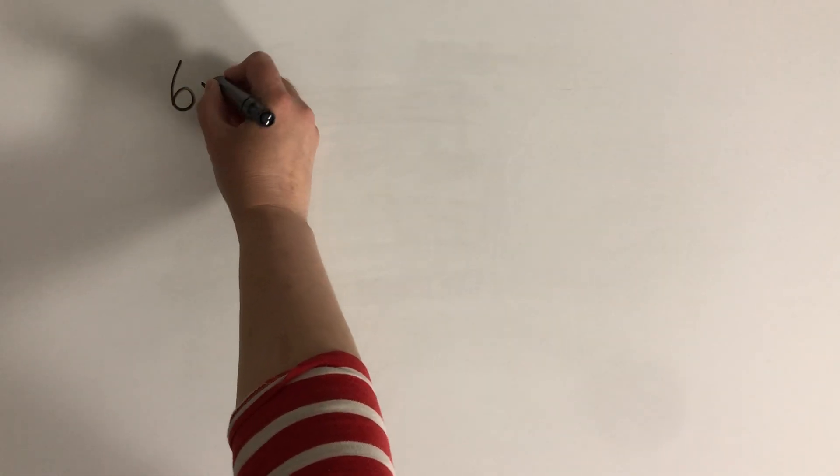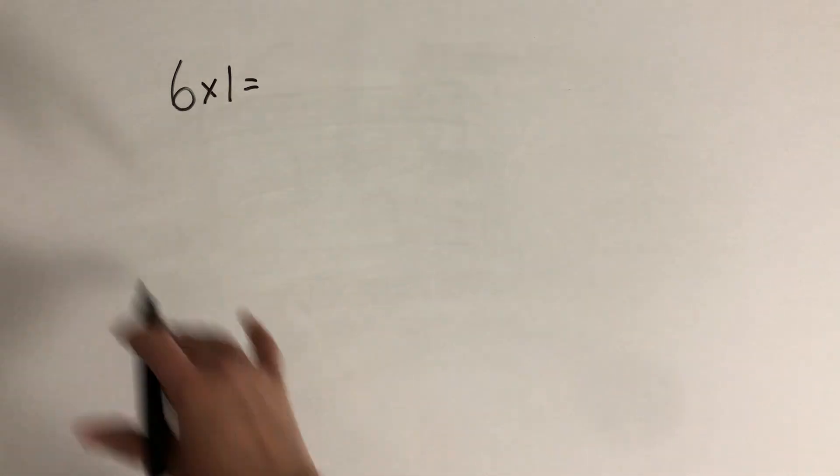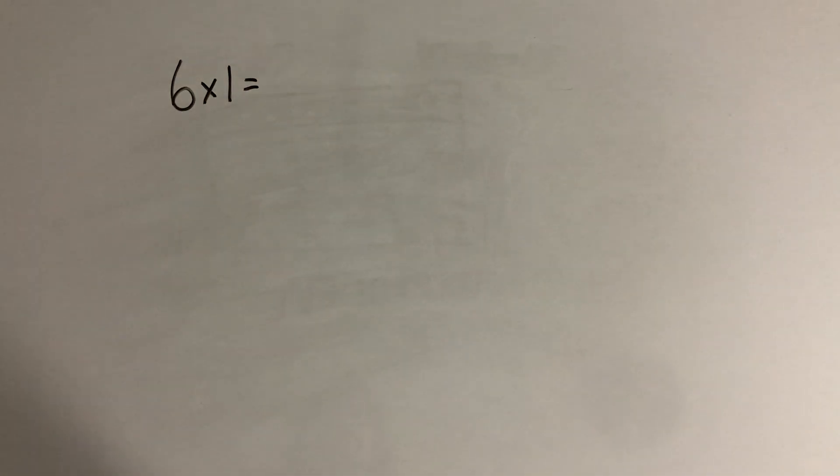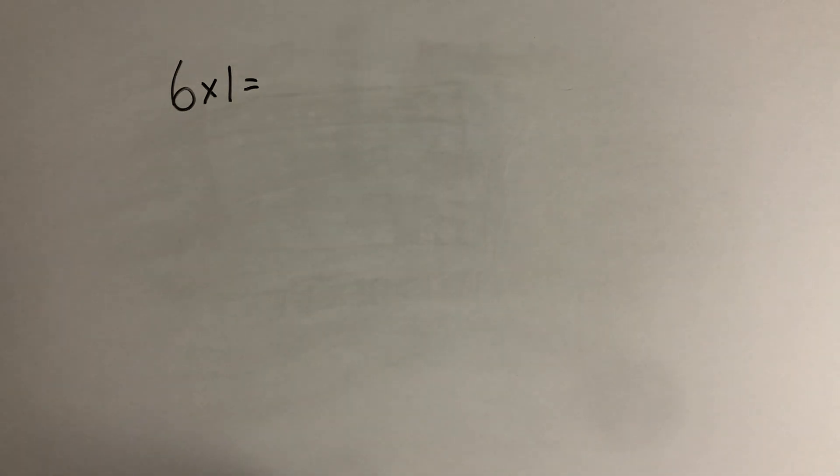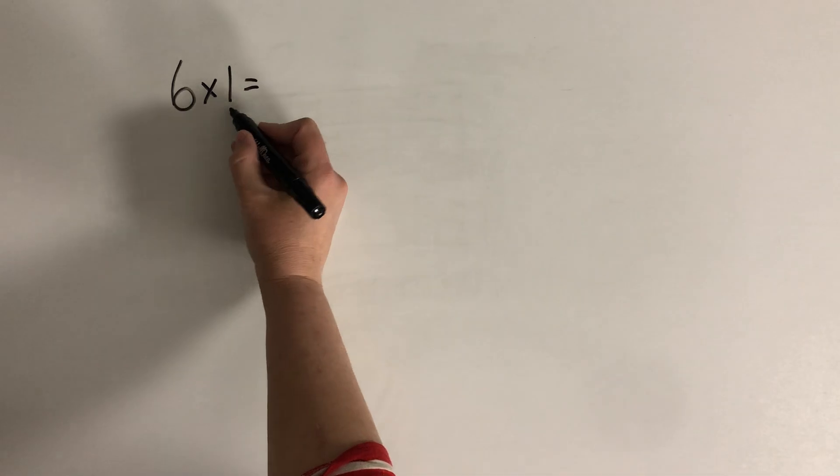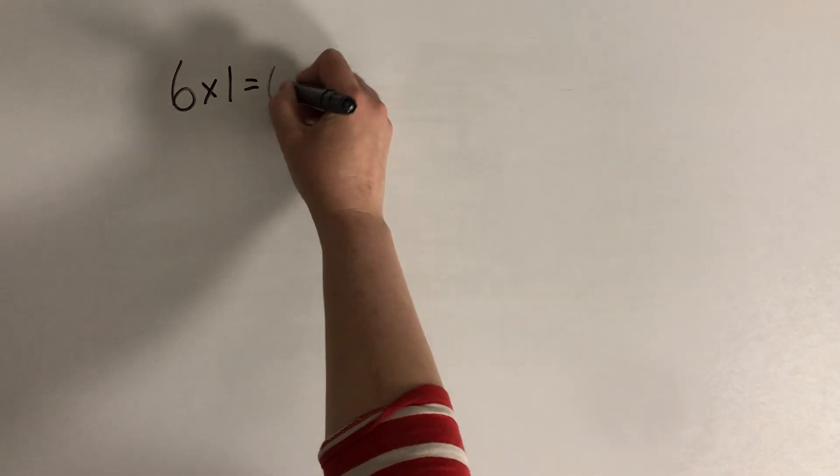So let's go through the 6s facts. Now I'm going to talk about a few strategies that I might use as we go through the facts. But the strategies that you might use might be very different. And that's completely fine, because it's wonderful that we all use different strategies that work well for us. So when I solve 6 times 1, I already know that anything times 1 is itself. So I know that this is 6.